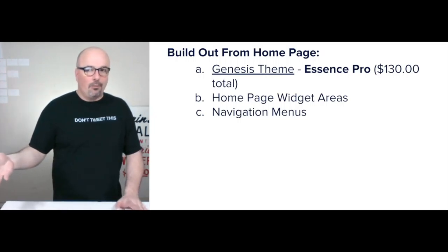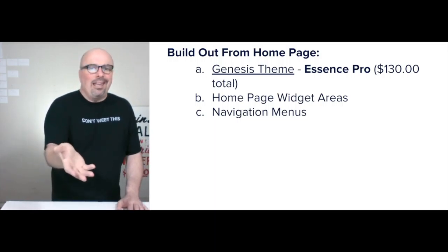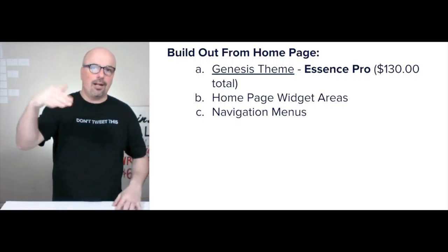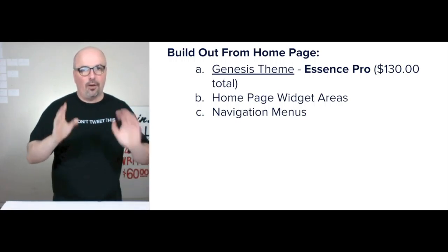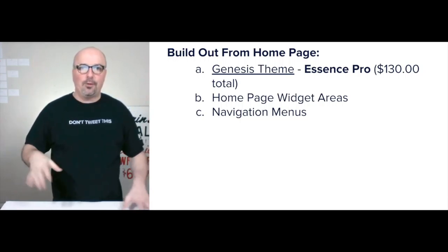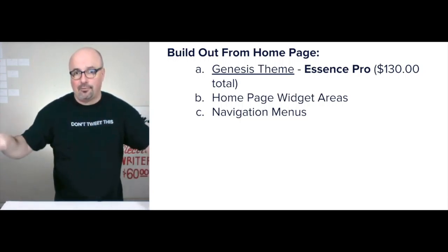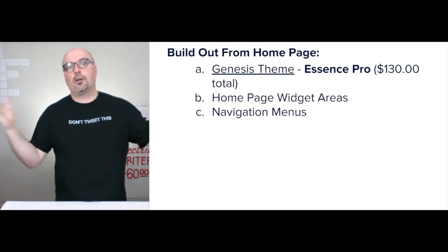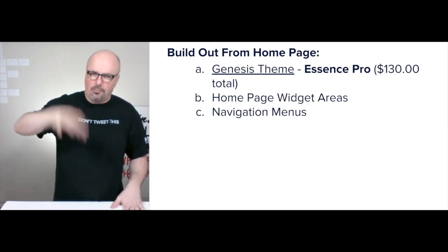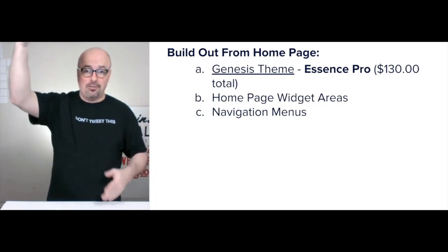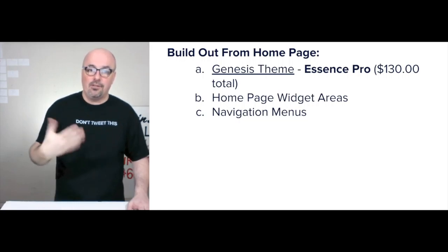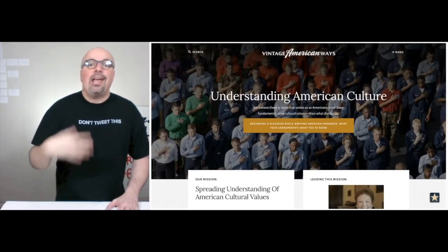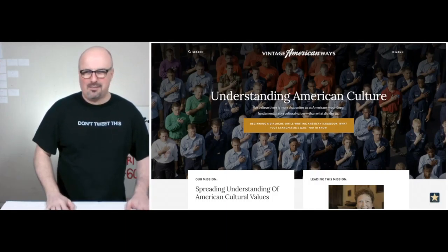We built it out from the home page. I'm using Essence Pro, which is a Genesis child theme — it's $130 if you've never bought anything from StudioPress.com before. That allows me to keep it simple, which is the goal. The home page widget areas let me build out the message on the home page. You start with the home page first and foremost because you can add pages, posts, and custom post types after that, but you need that front door. Navigation menus go at the top and the bottom of every page, and any pages on those menus need to be populated.